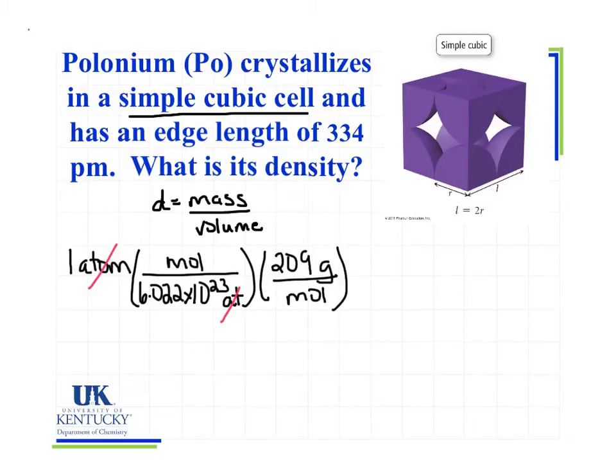And my units of moles cancel out. Now I can solve for my answer. So 1 divided by 6.022 e to the 23rd times 209. And that's equal to 3.47 times 10 to the minus 22nd. And that's in units of grams because that's the only unit that did not cancel out.